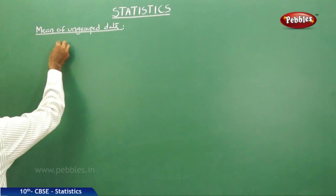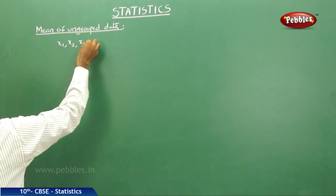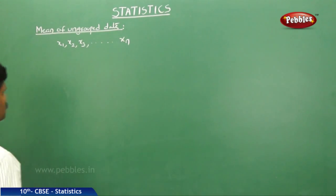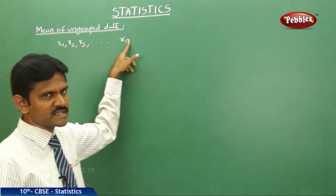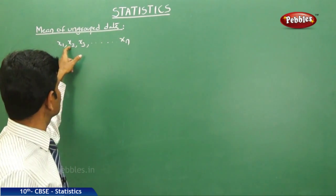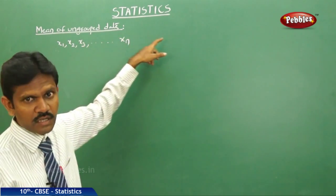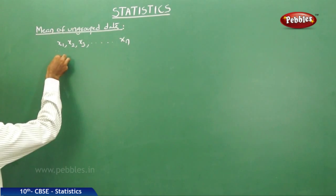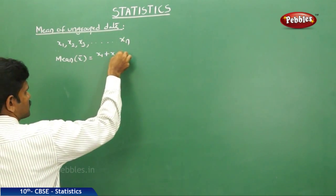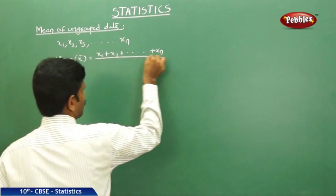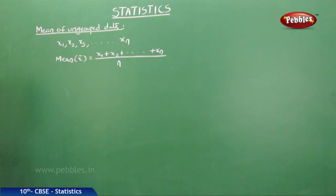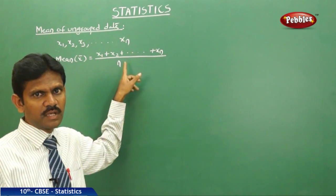If x1, x2, x3, and so on up to xn are observations — that is, n observations — then the mean x-bar is equal to (x1 + x2 + x3 + ... + xn) / n. This is the mean formula for ungrouped data: the sum of all items divided by the number of items.